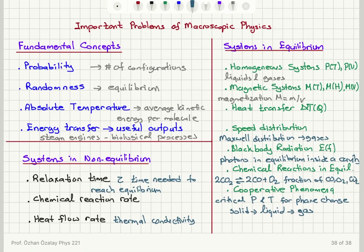For systems not in equilibrium, we're interested in the time needed to reach equilibrium — the relaxation time. For chemical reactions, we ask what is the rate of the reaction, and for heat conduction processes, how long does it take for heat to flow from a hot to a cold body until equilibrium is reached. Important parameters like thermal conductivity are relevant here.